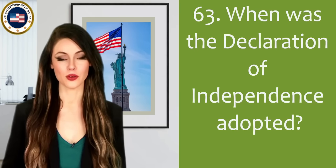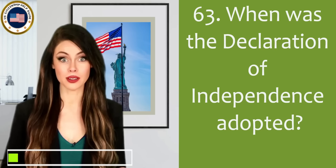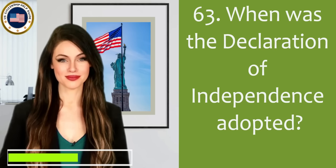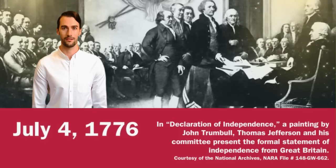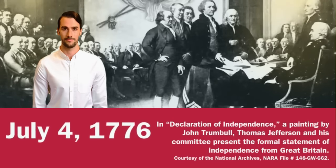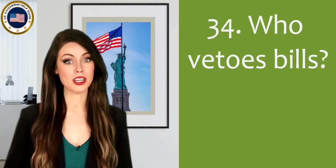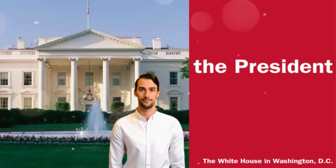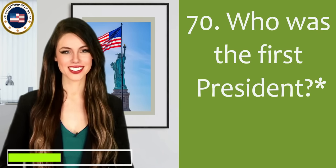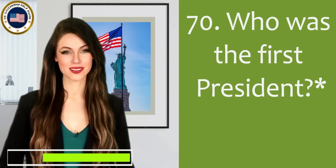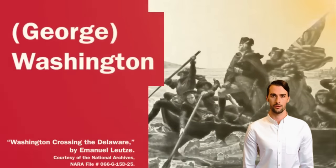When was the Declaration of Independence adopted? July 4, 1776. Who vetoes bills? The President. Who was the first President? George Washington.